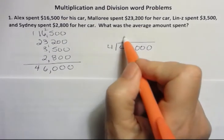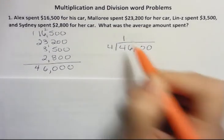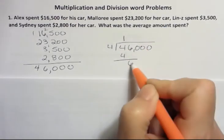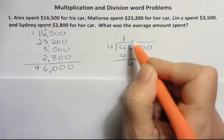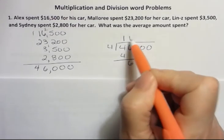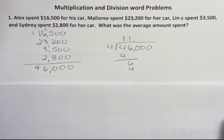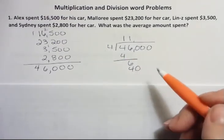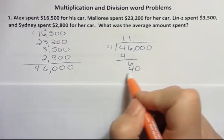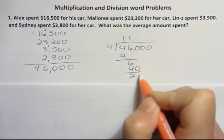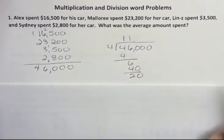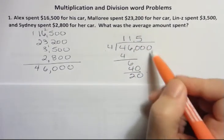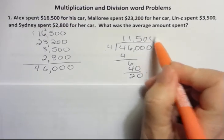4 goes into 4 once. 1 times 4 is 4. Then 6 — 4 goes into 6 one time. 1 times 4 is 4. We're going to bring down the 0. 4 goes into 20 — sorry, I didn't subtract. That's 2. Bring down the 0. 4 goes into 20 five times. And then I just have more zeros so I can bring those straight up.